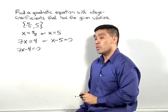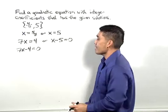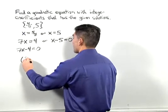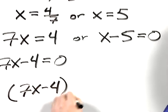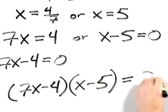With these two linear equations, we can use the zero product property that says that 7x minus 4 times the quantity x minus 5 must also equal 0.